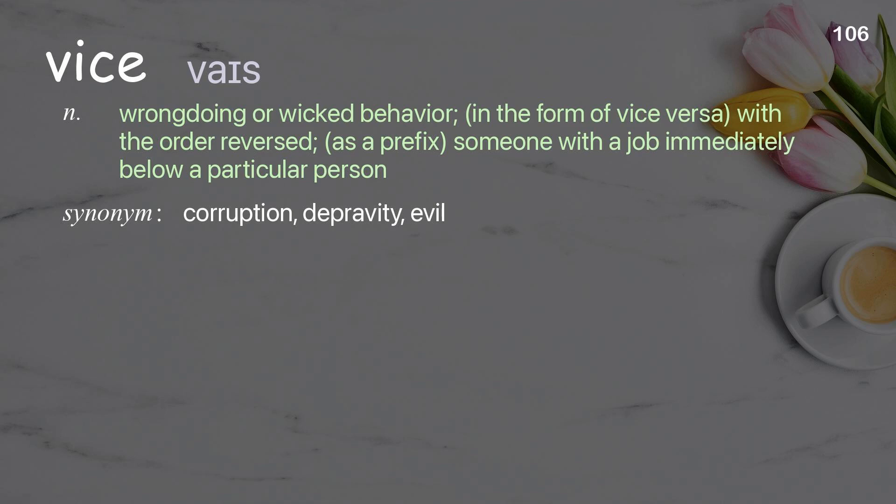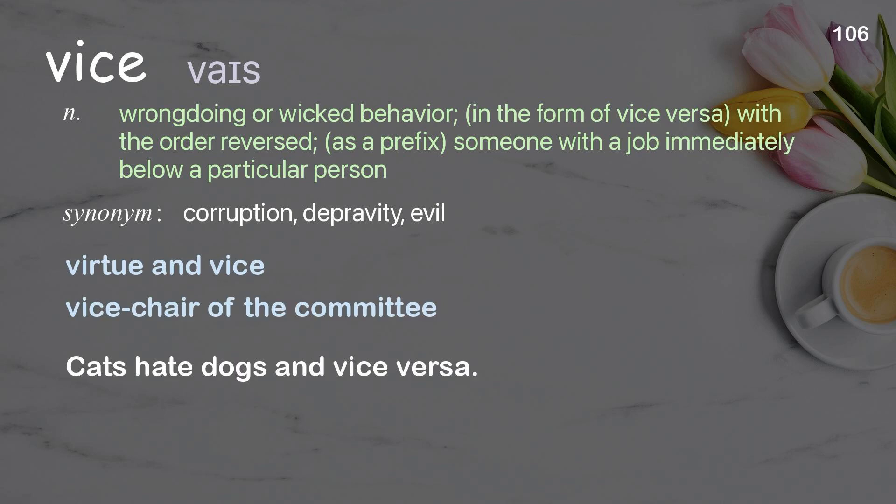Vice: wrongdoing or wicked behavior. In the form of 'vice versa': with the order reversed. As a prefix: someone with a job immediately below a particular person. Examples: virtue and vice, vice chair of the committee. Cats hate dogs and vice versa.